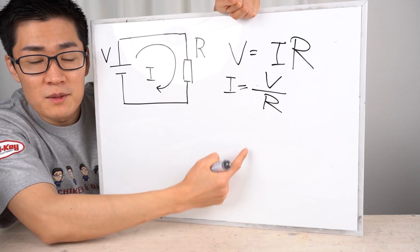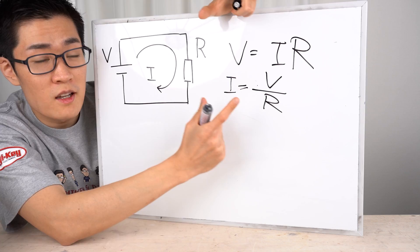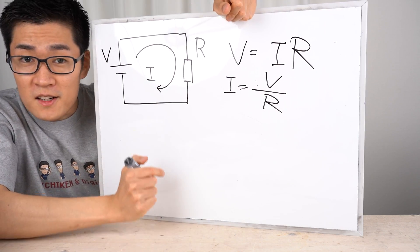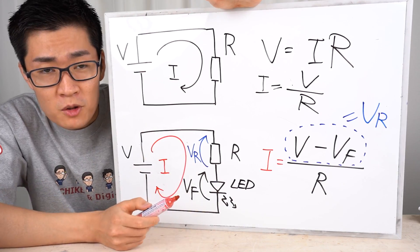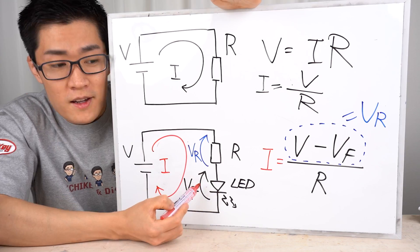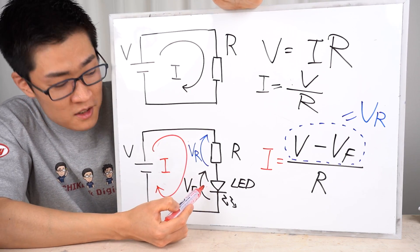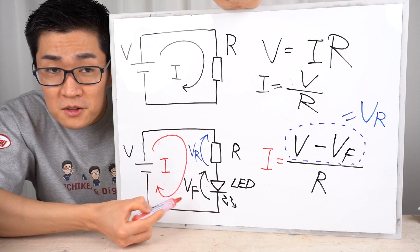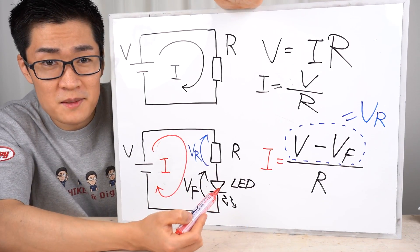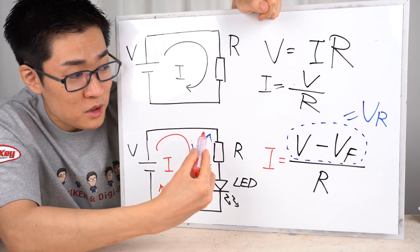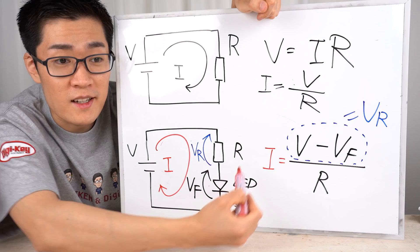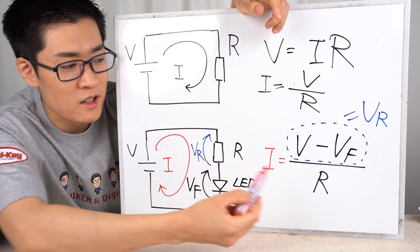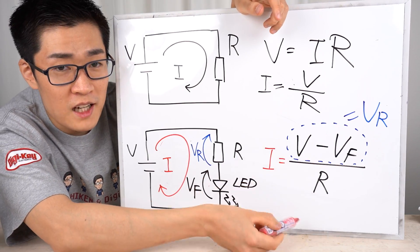That means in this simple circuit, you can control the current by controlling the resistance value. If you increase the resistance value, less current flows. If you decrease the resistance value, more current flows. The same goes when an LED is connected. If you connect a resistor to an LED in series, you can calculate the current that flows through this circuit using this formula. The power supply voltage minus the LED voltage equals the voltage across the resistor. If you divide it by the resistance value, you can find the amount of current.